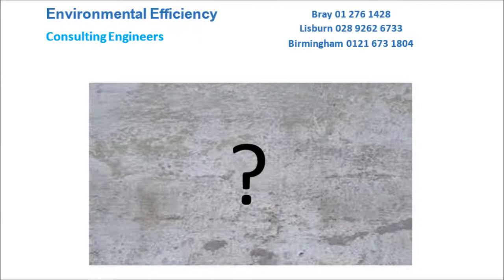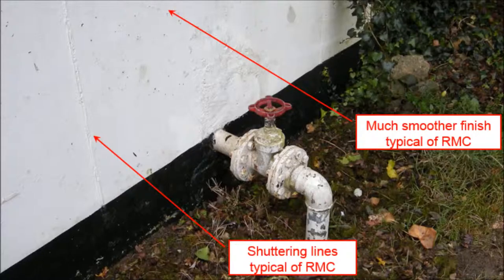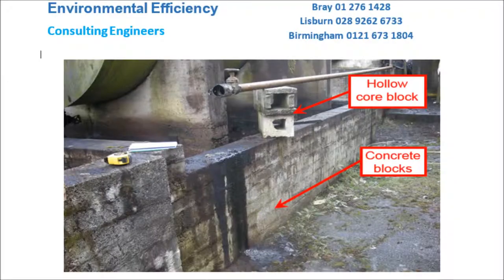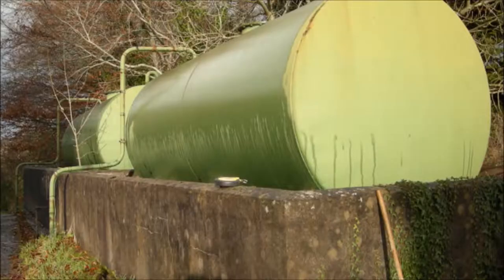How can you tell the difference between reinforced mass concrete bunds and block bunds? Don't they look the same? Reinforced mass concrete bunds tend to have a smooth surface and there is usually evidence showing where the shuttering was in position. With block bunds, the individual blocks are sometimes visible, or the blocks may be covered with a render of concrete, in which case the surface of the render will be rough.